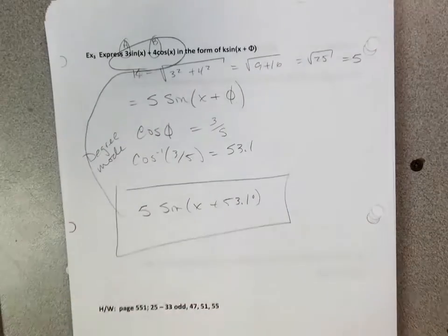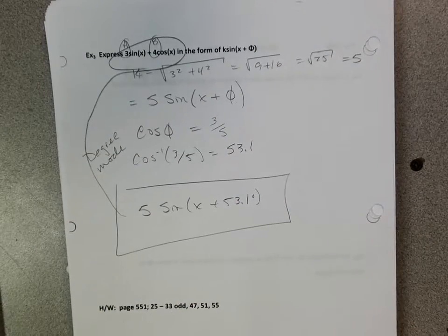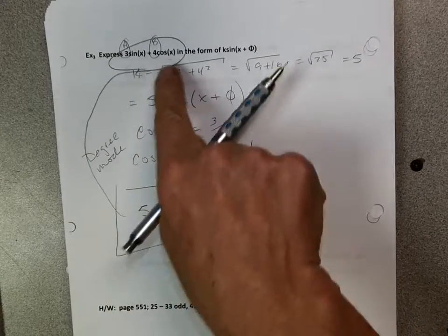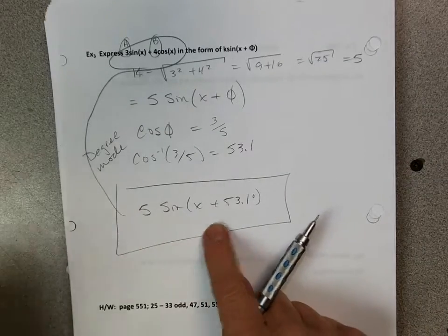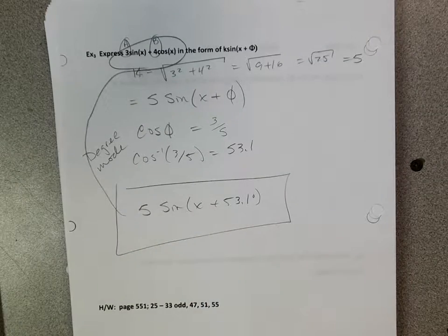So we can finish this up. Our answer should look like this: 5 sine of x plus 53.1 degrees is equivalent to our original. Our original was in terms of sine plus cosine, and now we've rewritten it as a single sine term. Not so bad.